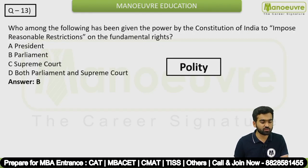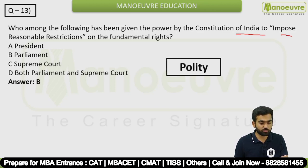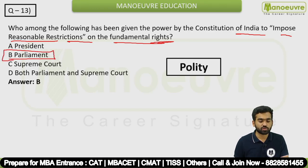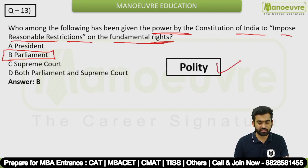Question 13: Who among the following has been given the power by the Constitution of India to impose reasonable restrictions on Fundamental Rights? The answer is option B — Parliament. Parliament has this power. This is a polity-related question.